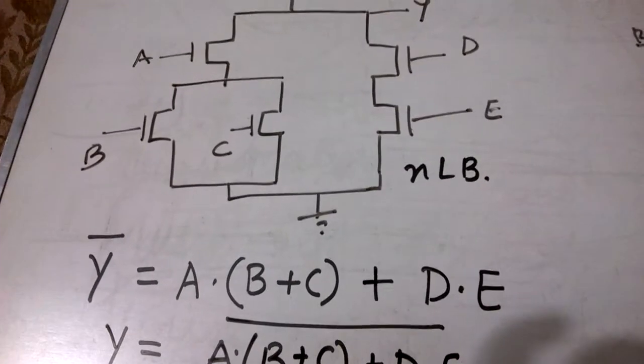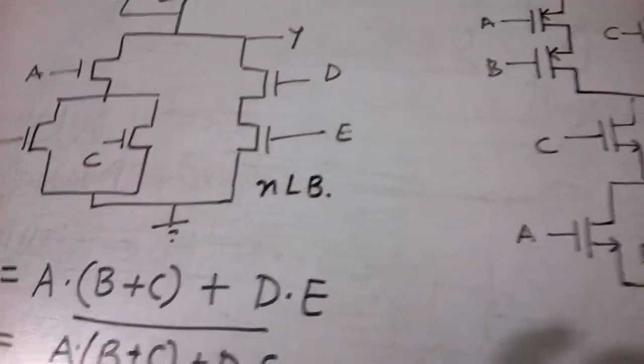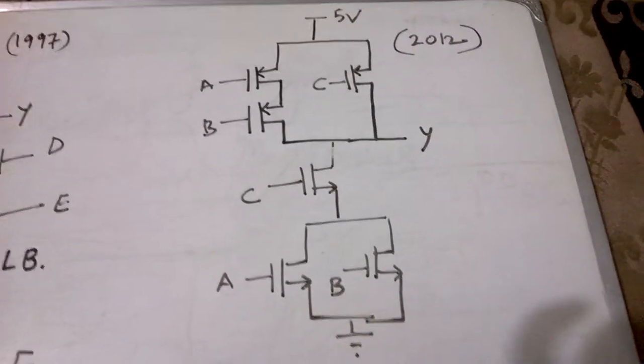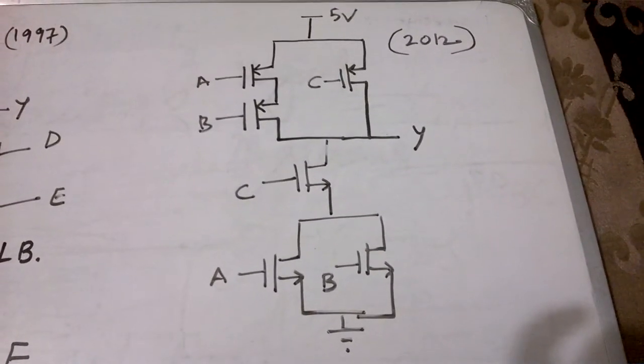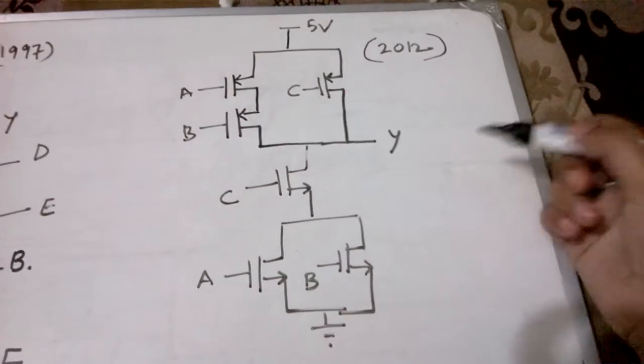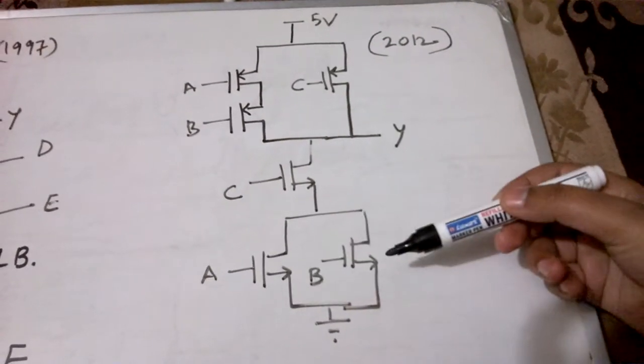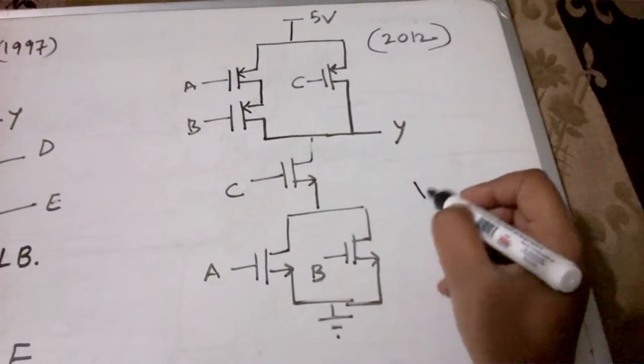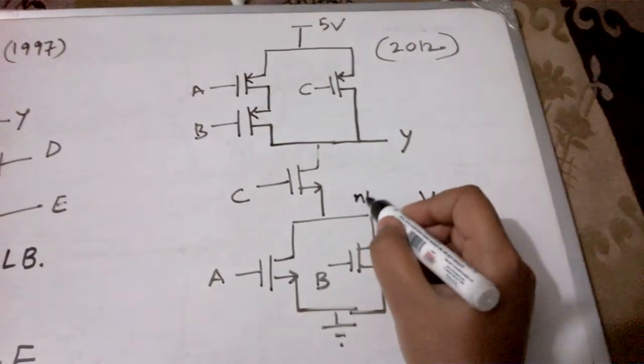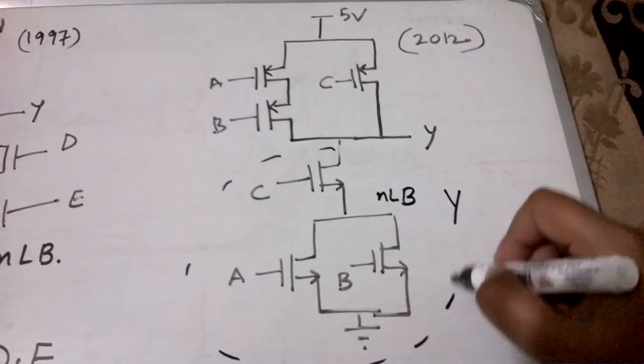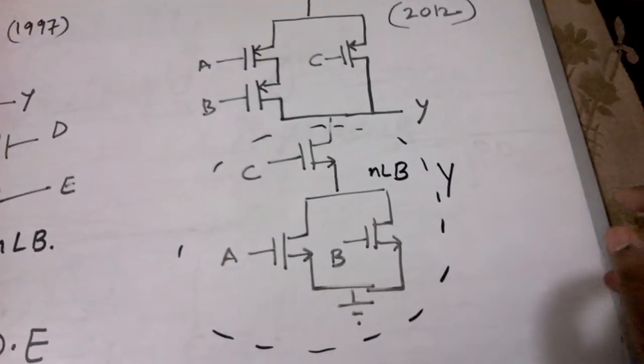Let's take one more example that was asked in 2012. This is the example. In this you can see the symbols used are different. These are all the PMOS devices and the lower part is your NMOS devices. Now how we are going to write the expression? Again we will use the N logic block to write the expression. What is the N logic block? This complete part which I am encircling, this is the N logic block.